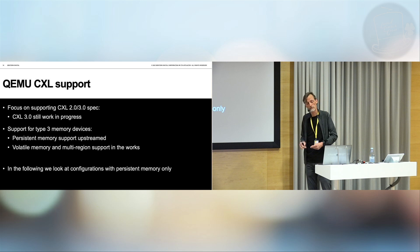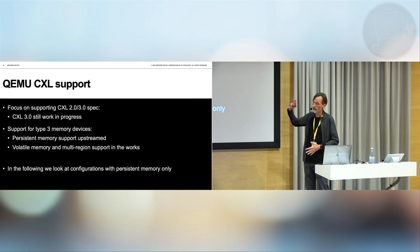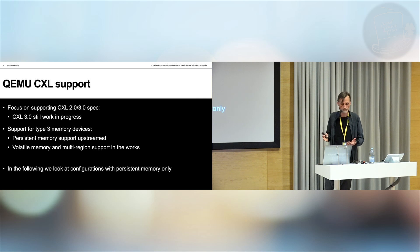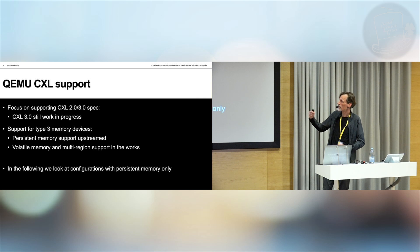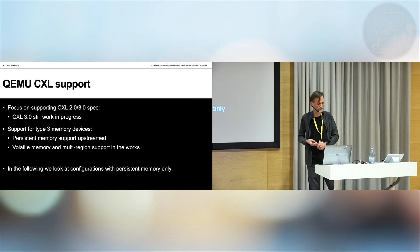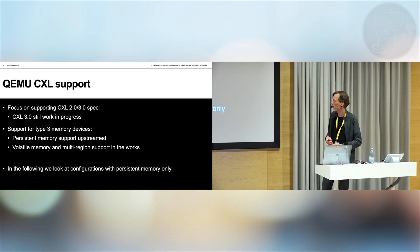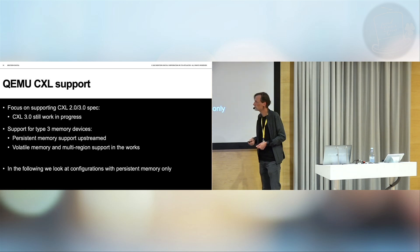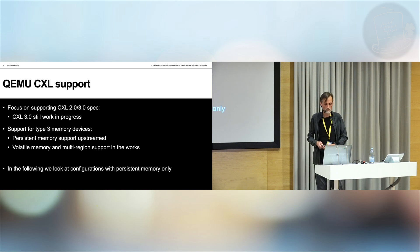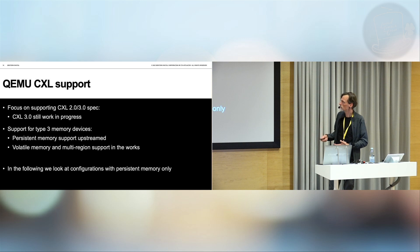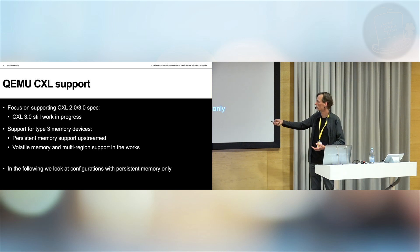In QEMU, the focus was initially on supporting CXL 2.0, mostly coming from Intel. Ben Widawsky did the first implementation as part of also validating the CXL 2.0 specification. Currently, at least upstream, it only supports persistent memory. CXL 3.0 is being worked on by several different groups, volatile memory is being added, and multi-region support as well. On the Linux OS side, we're seeing more patches going in for support of volatile memory as well. Standard QEMU was, at least until recently, only supporting persistent memory.